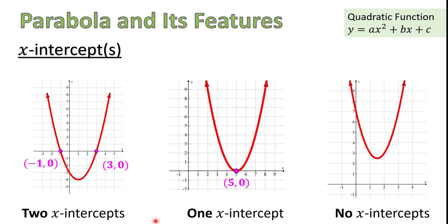So these are the main features of the graph of a quadratic function, which we also call a parabola.